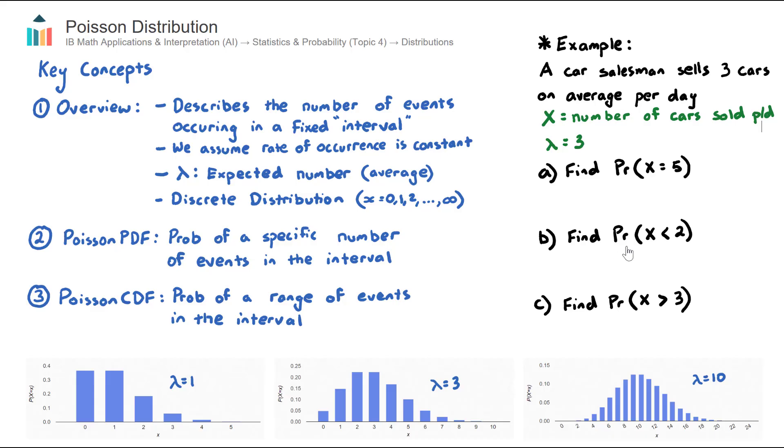Or you'll be asked for a probability of a range of events. For example, in part B, the probability that the salesman sells less than two cars, or in part C, the probability that the salesman sells more than three cars.